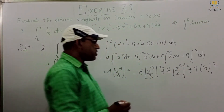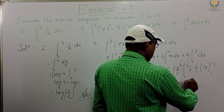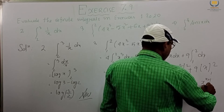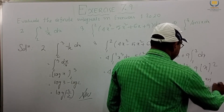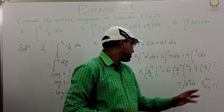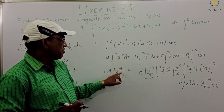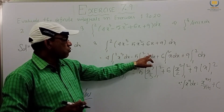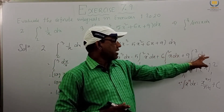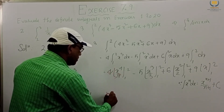Using the formula ∫xⁿ dx = xⁿ⁺¹ by (n+1) plus c: for n=3 we get x⁴ by 4; for n=2 we get x³ by 3; for n=1 we get x² by 2; and dx gives x. The 4 in the coefficient cancels with the 4 in x⁴ by 4, leaving x⁴ evaluated from 1 to 2. Similarly, we get 5 by 3 times x³, 3 times x², and 9 times x, all evaluated from 1 to 2.